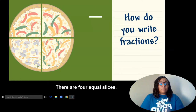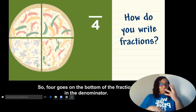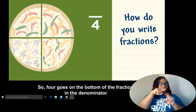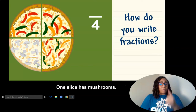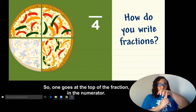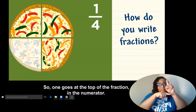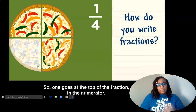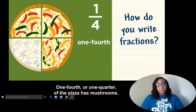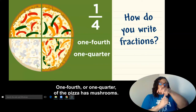There are four equal slices. So four goes on the bottom of the fraction in the denominator. One slice has mushrooms. So one goes at the top of the fraction in the numerator. One-fourth, or one-quarter, of the pizza has mushrooms.